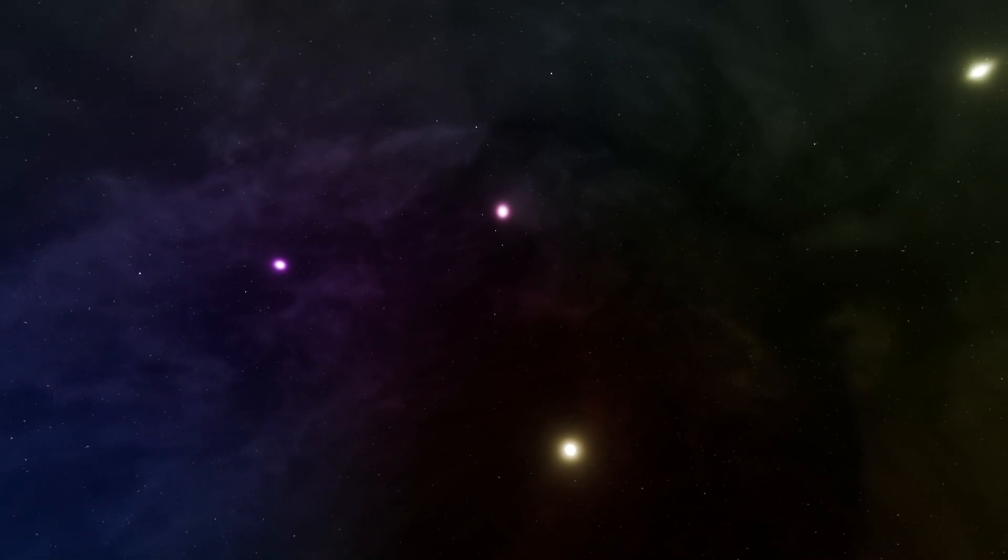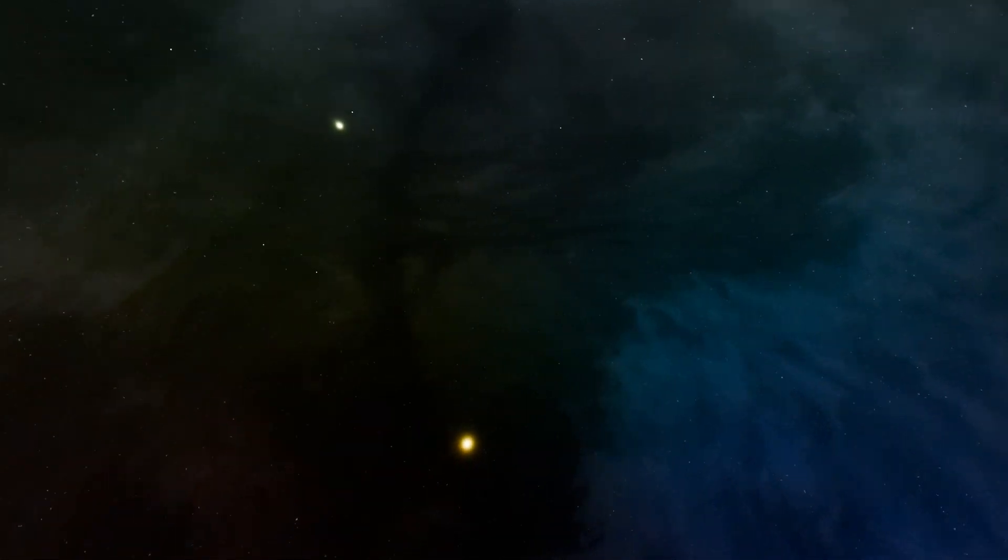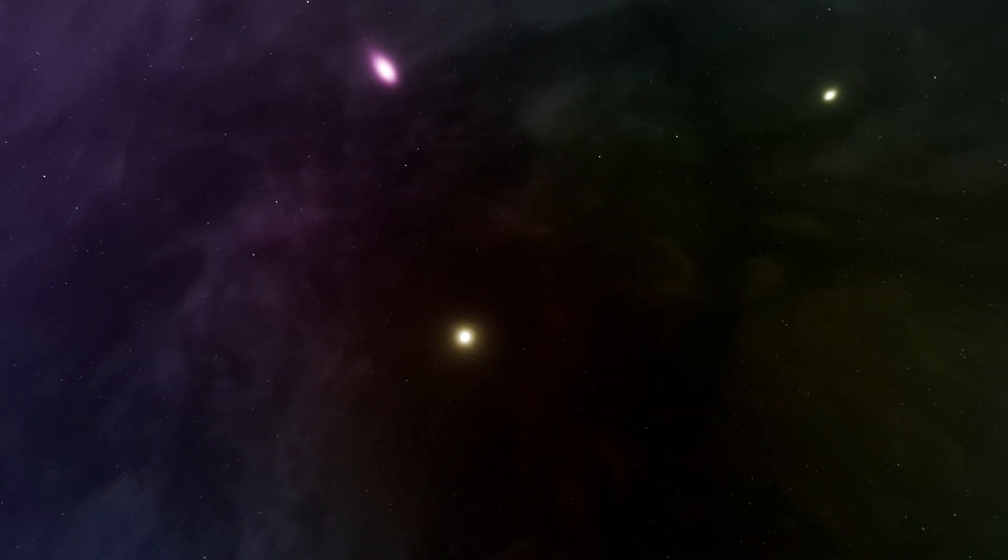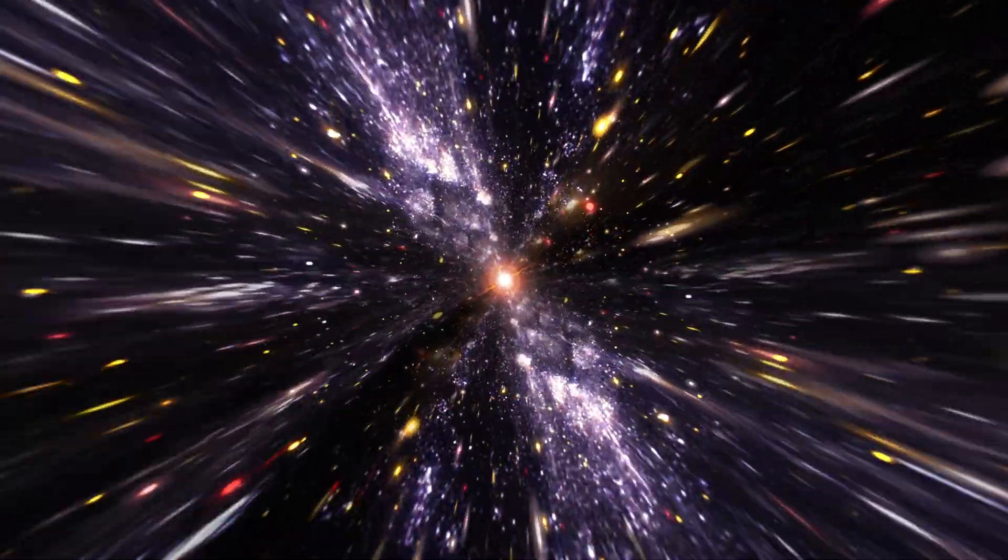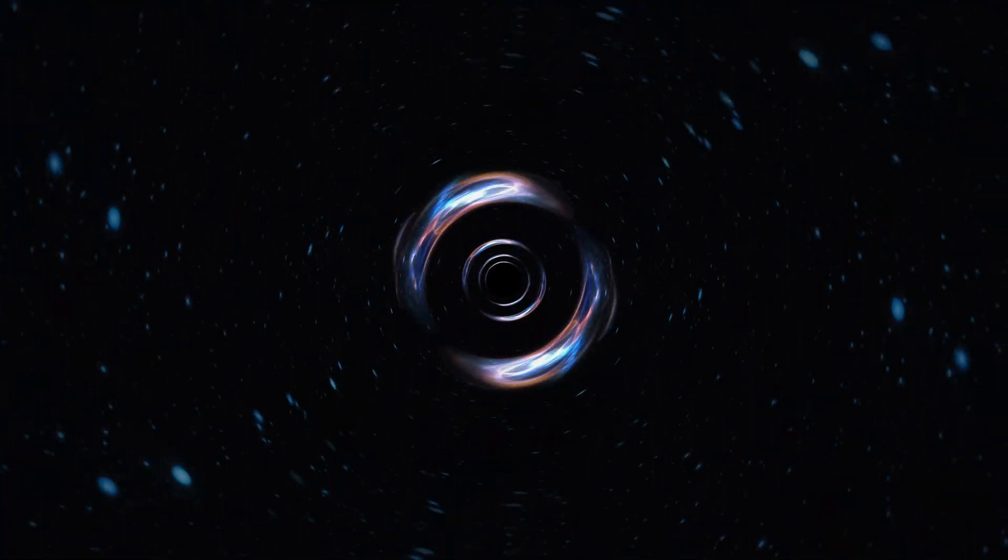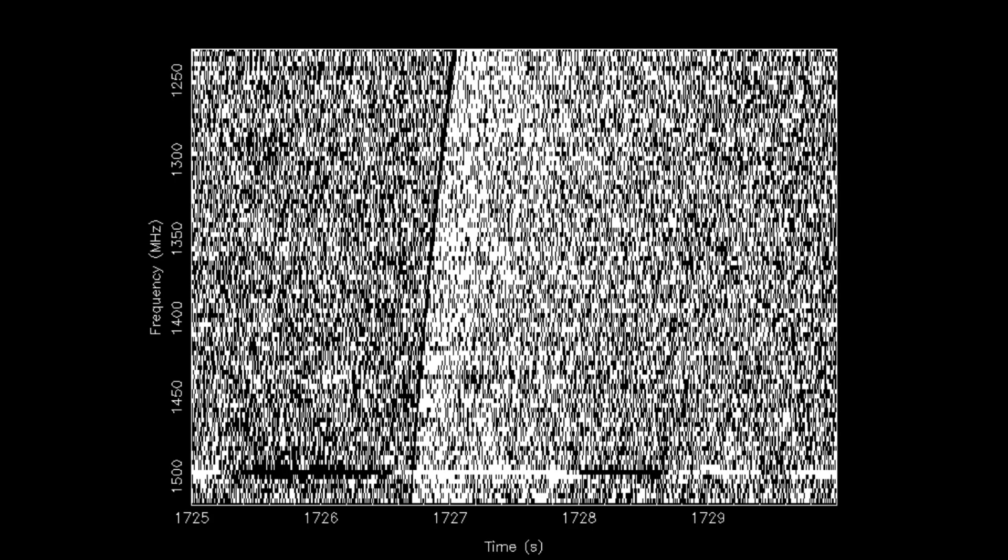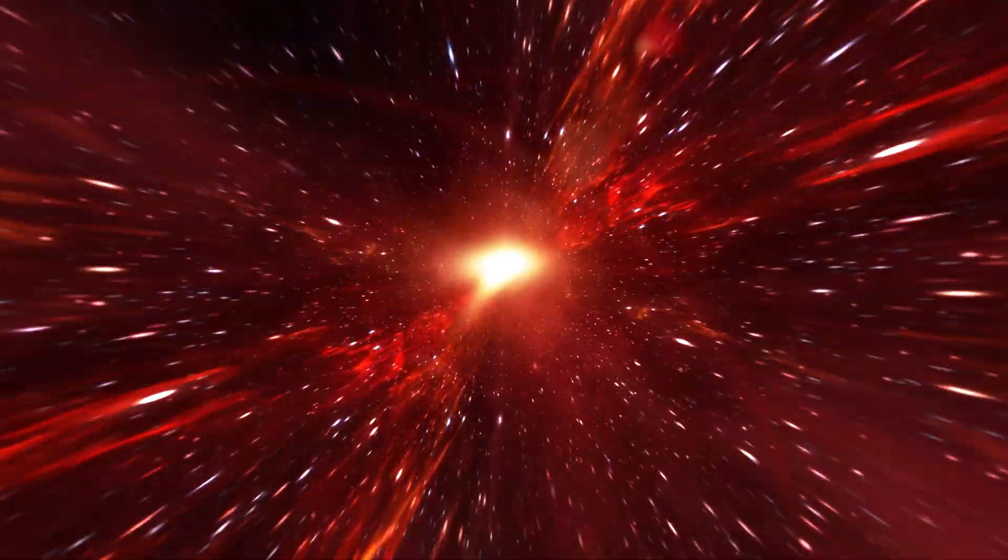Every so often, the universe sends us a message. A sharp, powerful radio signal that lasts just milliseconds. It comes without warning from seemingly random directions in space, and it's gone before we can blink. These are called fast radio bursts, or FRBs. And they are among the most mysterious and unexplainable phenomena in modern astronomy. The first FRB was discovered in 2007, almost by accident. At first, many scientists thought it was a glitch or interference. But more kept coming. Some repeated. Most didn't. They were short, bright, and incredibly energetic. Each one releasing as much energy in a fraction of a second as the sun emits in days.